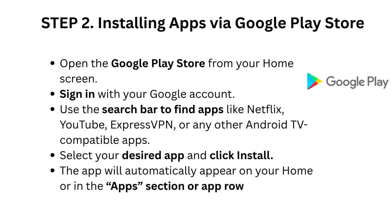Use the search bar to find apps like Netflix, YouTube, ExpressVPN, or any other Android TV compatible apps. Select your desired app and click Install. The app will automatically appear on your home screen, in the apps section, or app row.